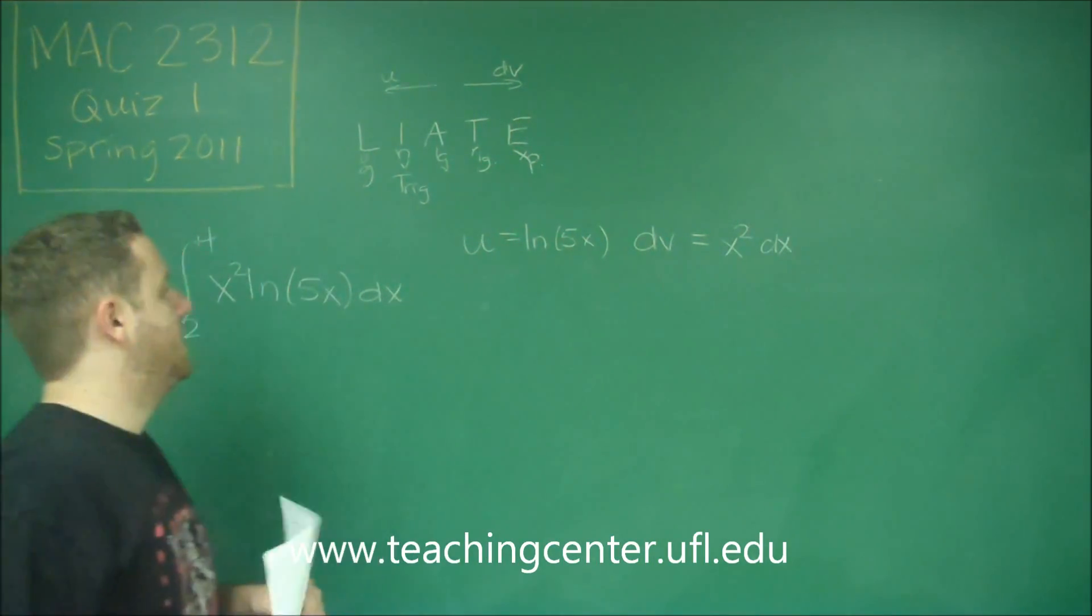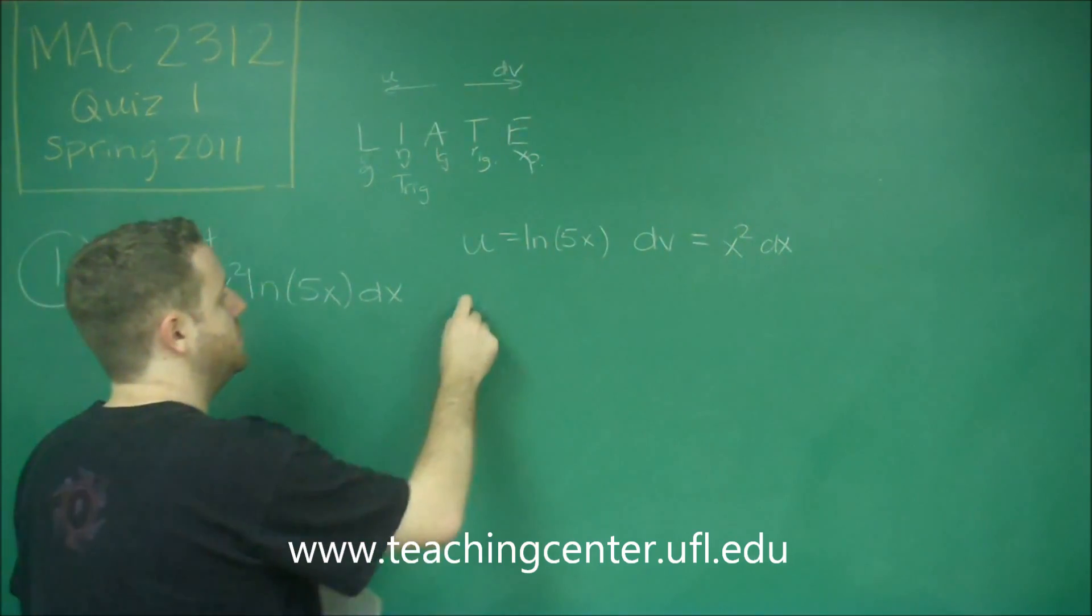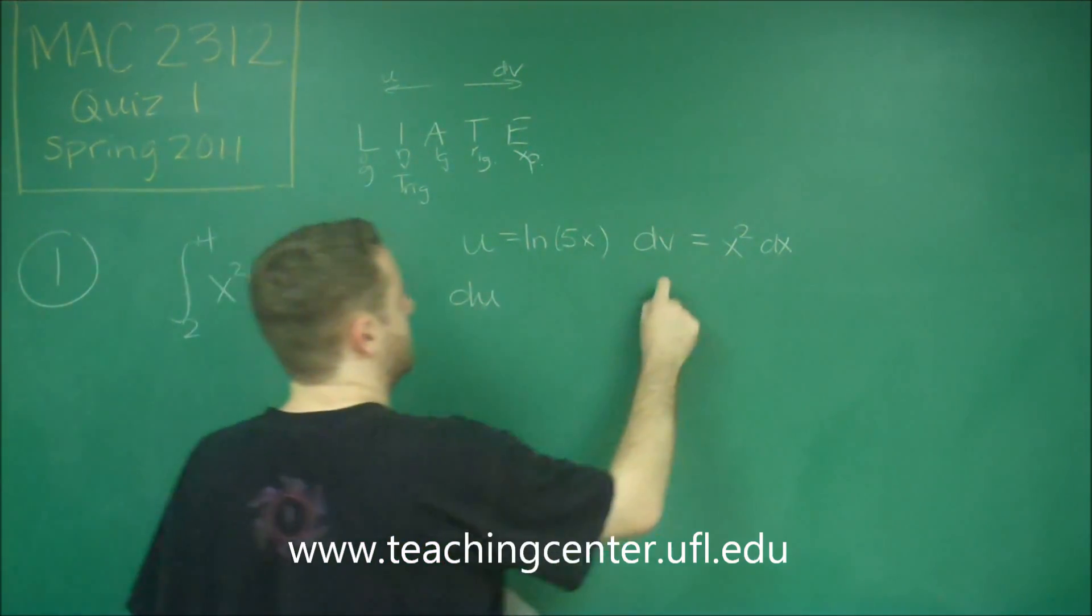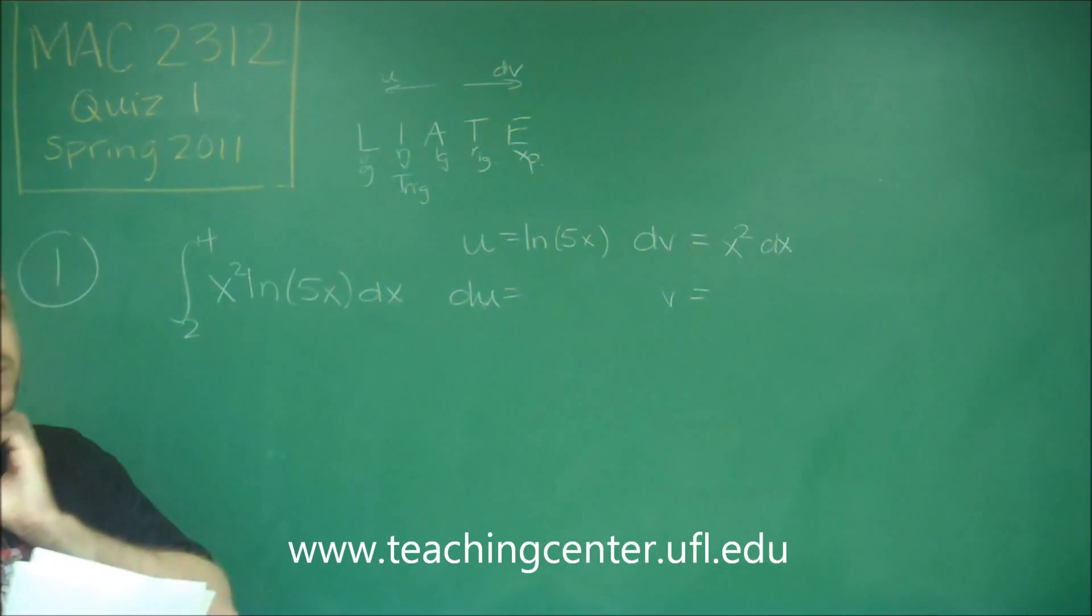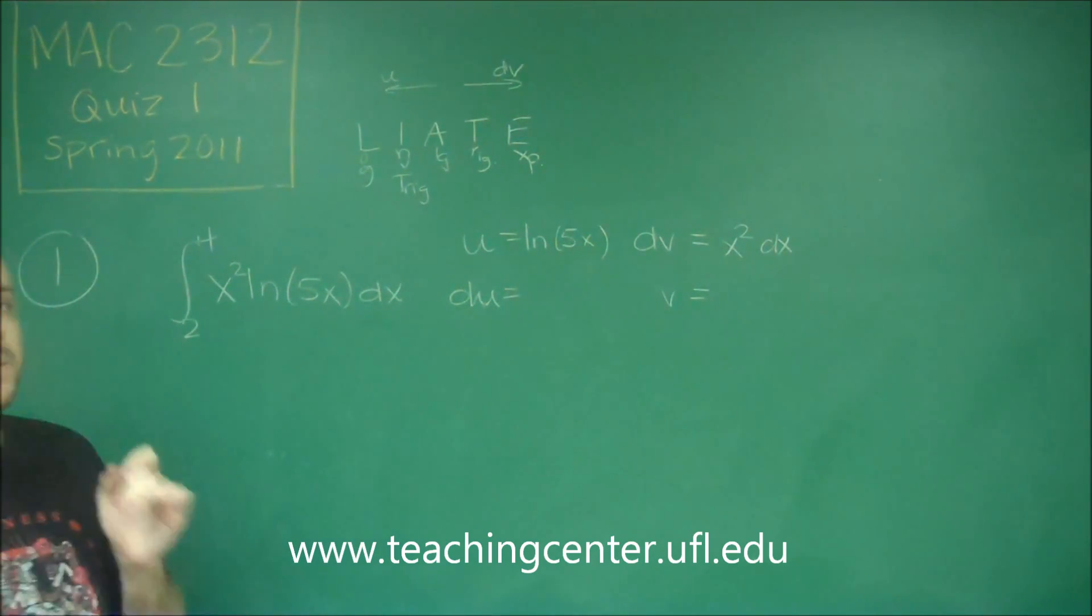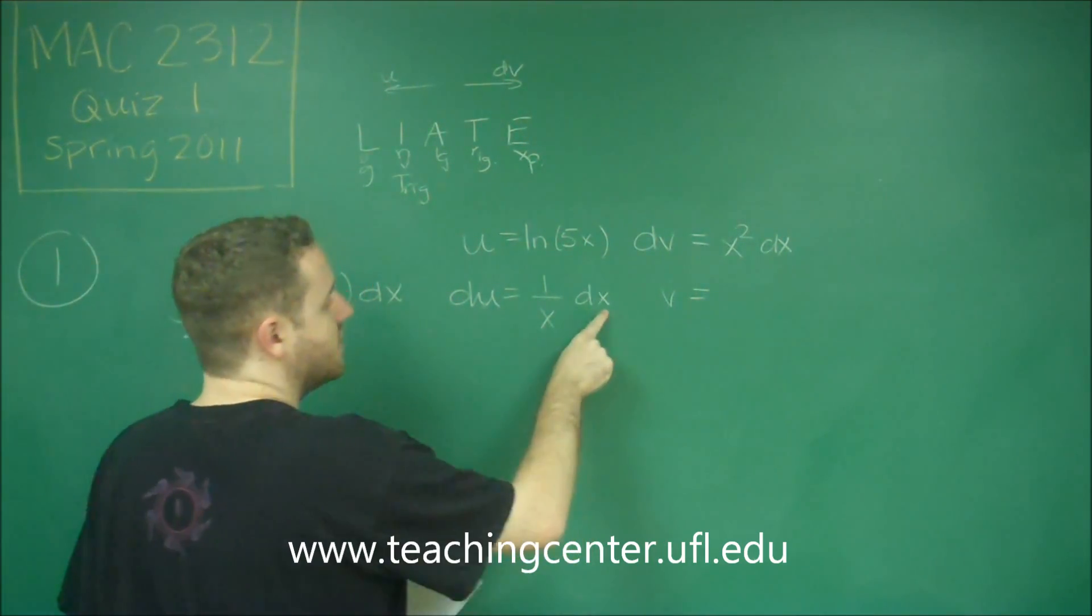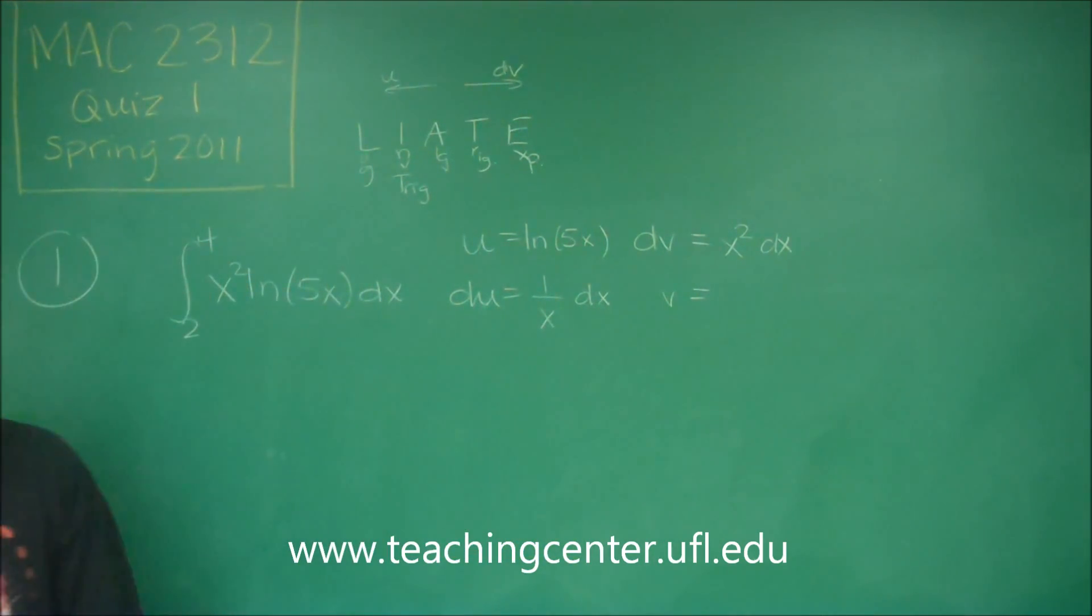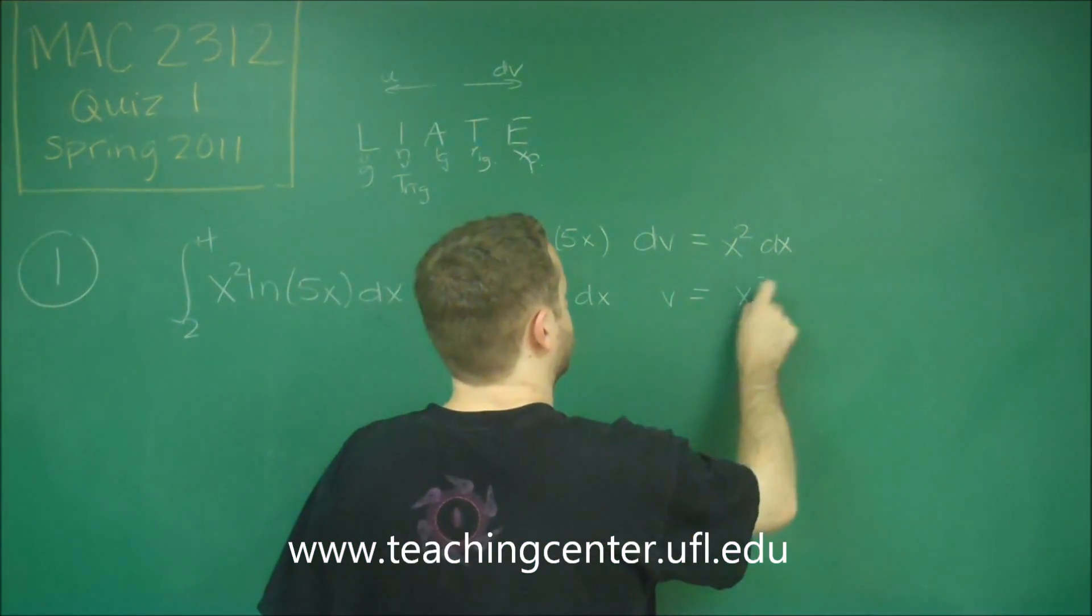Remember that the dv always takes the dx with it. So now you switch these to get du and v. The derivative of ln 5x would be 1 over 5x times 5, in other words just 1 over x. The dx is here now because you have a du there. And the antiderivative of x squared would be x cubed over 3.